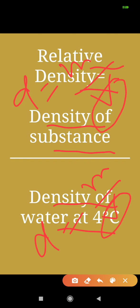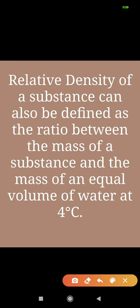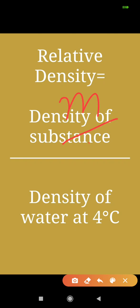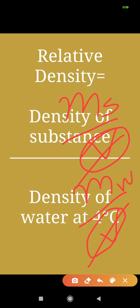If the volume of both is the same, the volumes cancel out. So relative density also equals the mass of the substance divided by the mass of water at 4 degrees Celsius, provided both occupy equal volumes. Relative density of a substance can be defined as the ratio between the mass of the substance and the mass of an equal volume of water at 4 degrees Celsius.